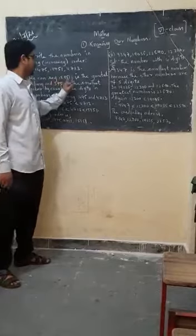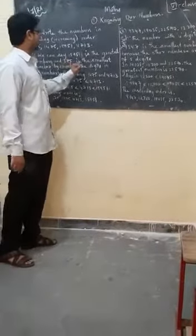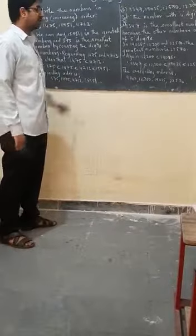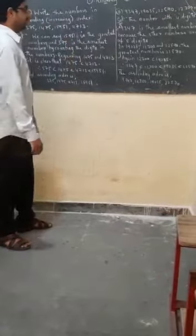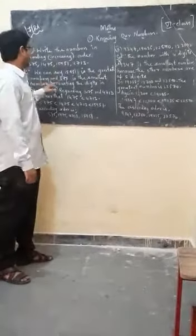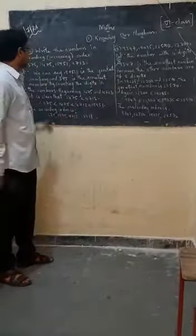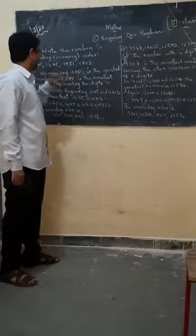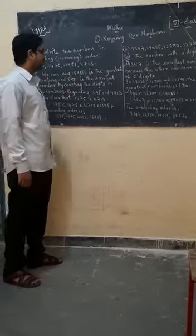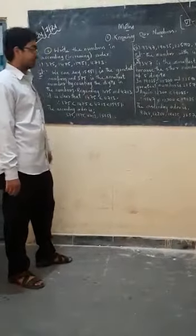We can say 15951 is the greatest number and 375 is the smallest number. 15951 is the greatest number among the set of these numbers, and 375 is the smallest number. By counting the digits in the numbers, we can tell this.